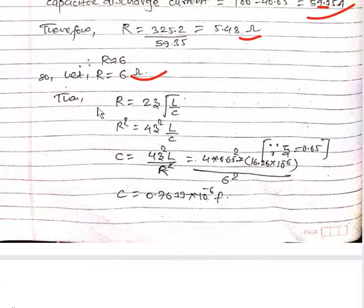The relation for R will be R equals 2ζ√(L/C). On further simplification we will get C equals 4ζ²L/R². On substituting values we will get C equals 0.7633 × 10^-6 farads.